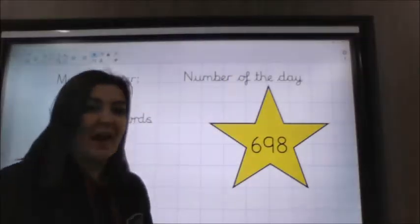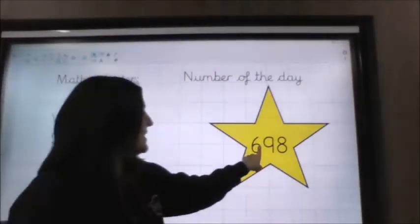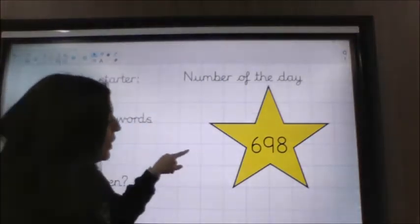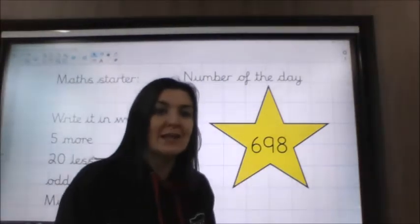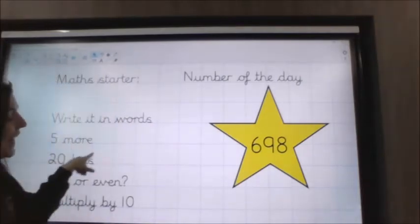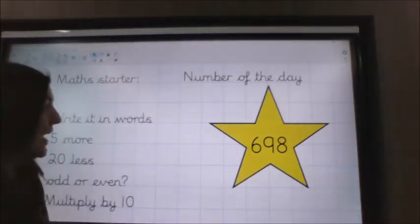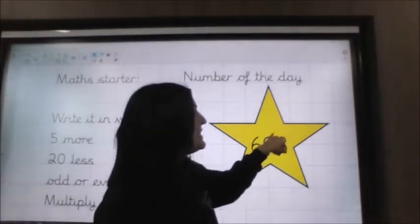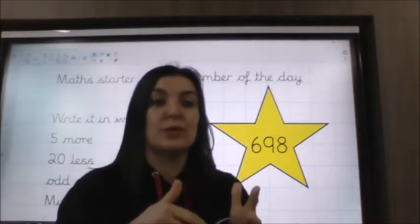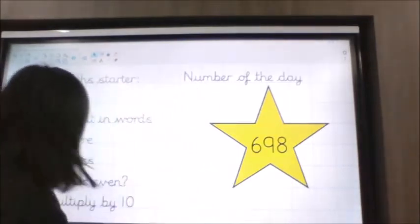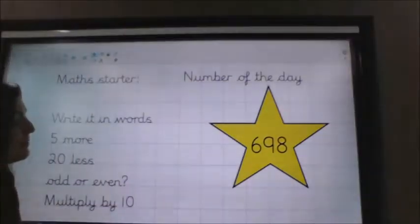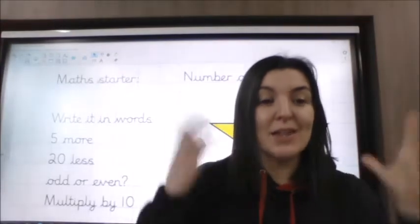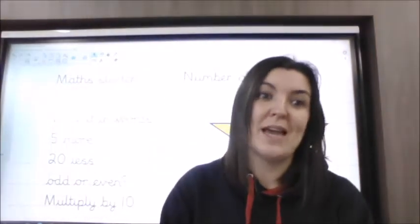So you should have had in words 698. Then you should have 5 more, which would take you to 703. 20 less would take you to 678. It's an even number because it ends in an 8 — if it's 0, 2, 4, 6 or 8 then it's even. And then multiply it by 10 you should have had 6,980. So that was to get your brains going before today's learning.